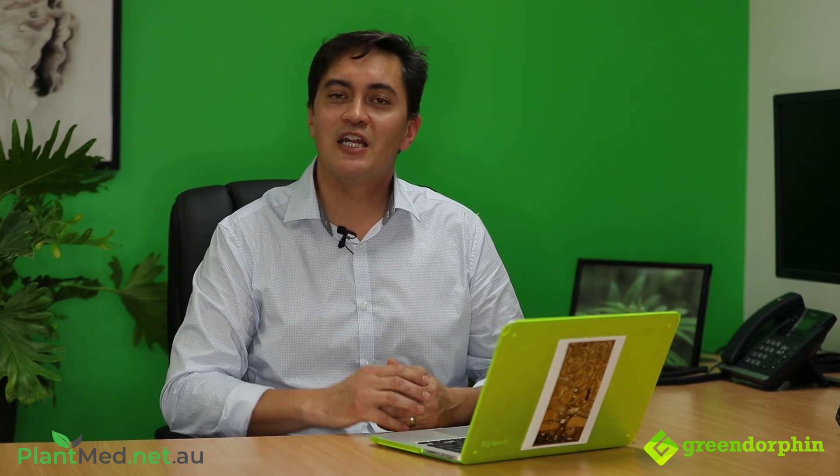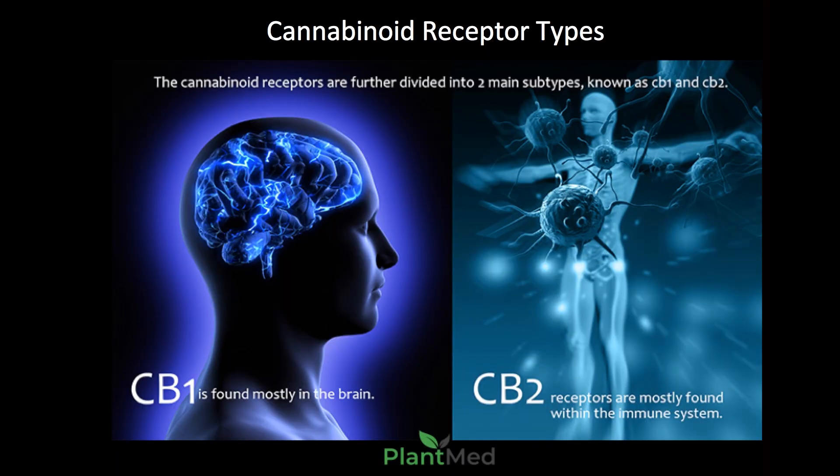There are two subtypes of cannabinoid receptor: cannabinoid receptor 1 and cannabinoid receptor 2. These are the two main types. There are other types of cannabinoid and endocannabinoid receptors in our body, but these are the two main ones we're going to look at today.